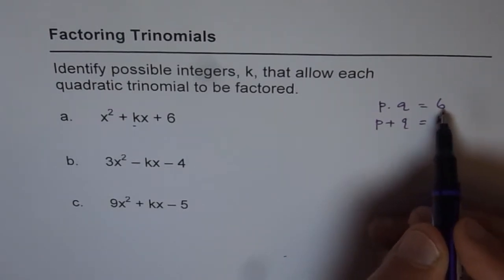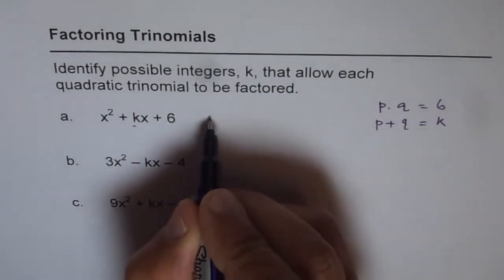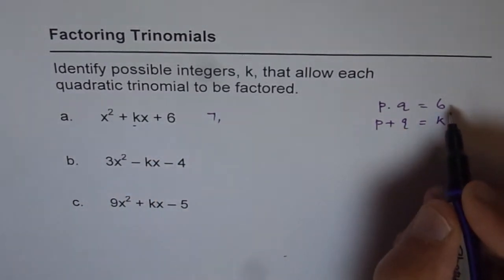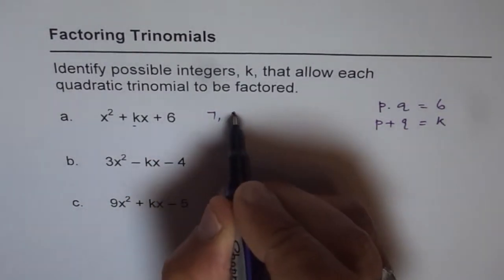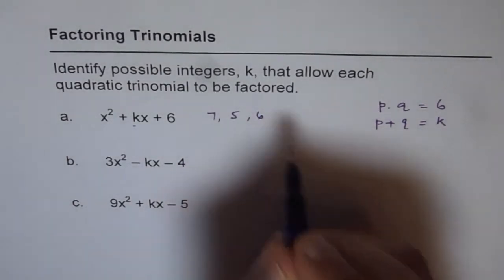So for example, 1 times 6 is 6. Therefore k could be, add them up, 7. 2 times 3 is 6, 2 plus 3 is 5. 3 times 3 is 6, 3 plus 3 is 6 itself.